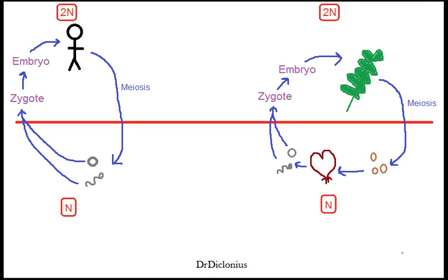Today we're going to talk about the human and the plant reproductive cycles. I've written 2n on the top and n on the bottom to represent diploid and haploid. Everything above this red line is diploid, and everything below is haploid.